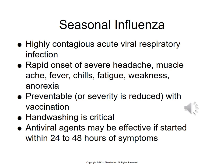Seasonal influenza is a highly contagious acute viral respiratory infection. Symptoms include rapid onset of headache, muscle ache, fever, chills, fatigue, and weakness. It is preventable, or at least the severity can be significantly reduced with vaccination. The vaccination includes strands of antigen for three or four virus strands that are expected to be prevalent in that particular season.